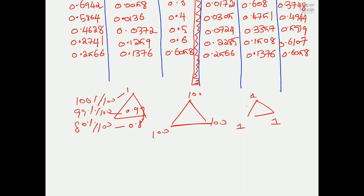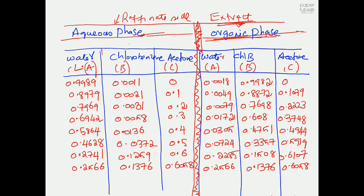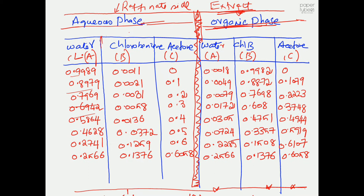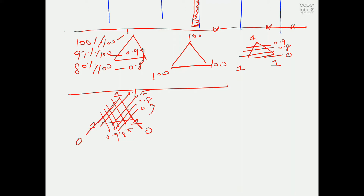Let's solve using weight fractions rather than percentages. If you're not comfortable, you can multiply every value by 100. When plotting on the graph sheet, assume all corners have value 1 instead of 100, so the grid lines become 0.9, 0.8, 0.5, down to 0.